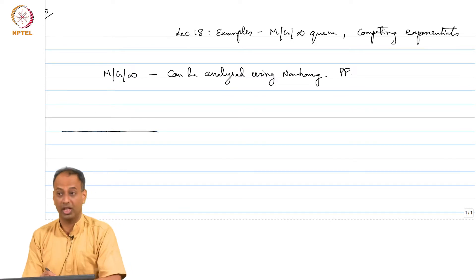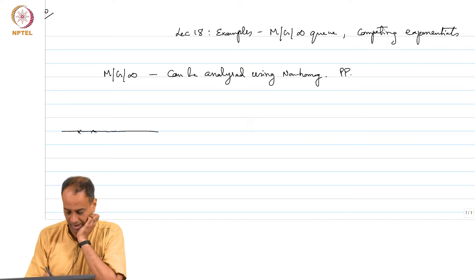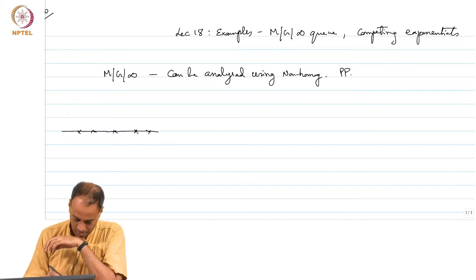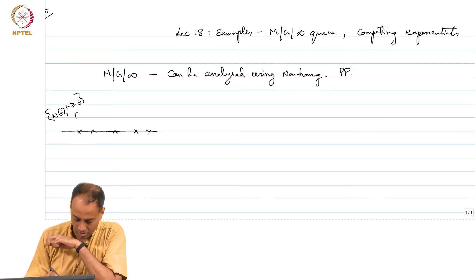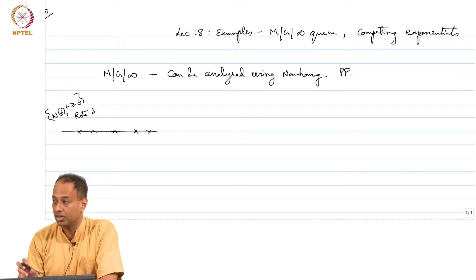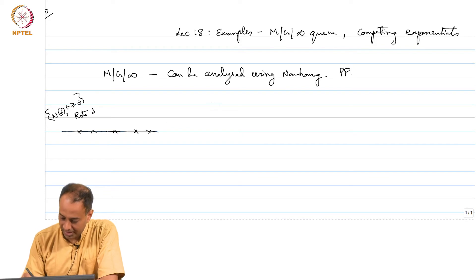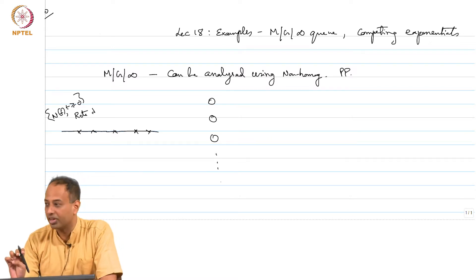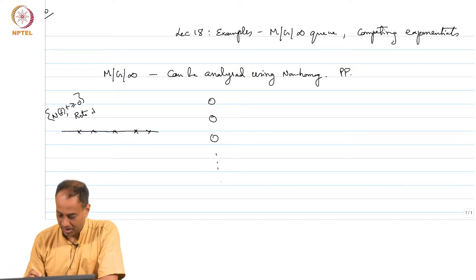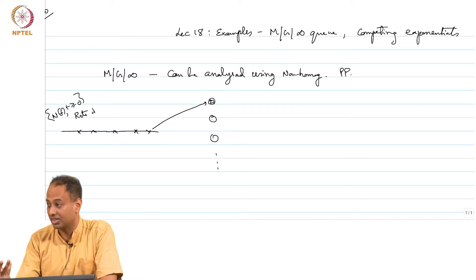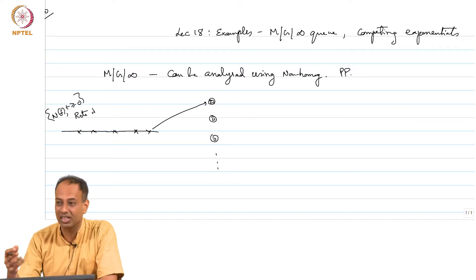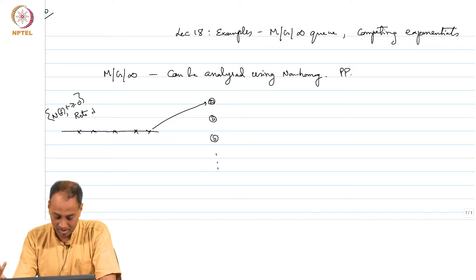The arrival process to an M/G/∞ queue is of course a Poisson process of rate λ. Let us call this N(t). This is a homogeneous Poisson process of rate λ — customers arrive at rate λ. There are infinitely many servers, so there is no waiting, no buffering. As soon as a customer arrives, she is directed to a server that is available. There is always an available server for any arriving customer.